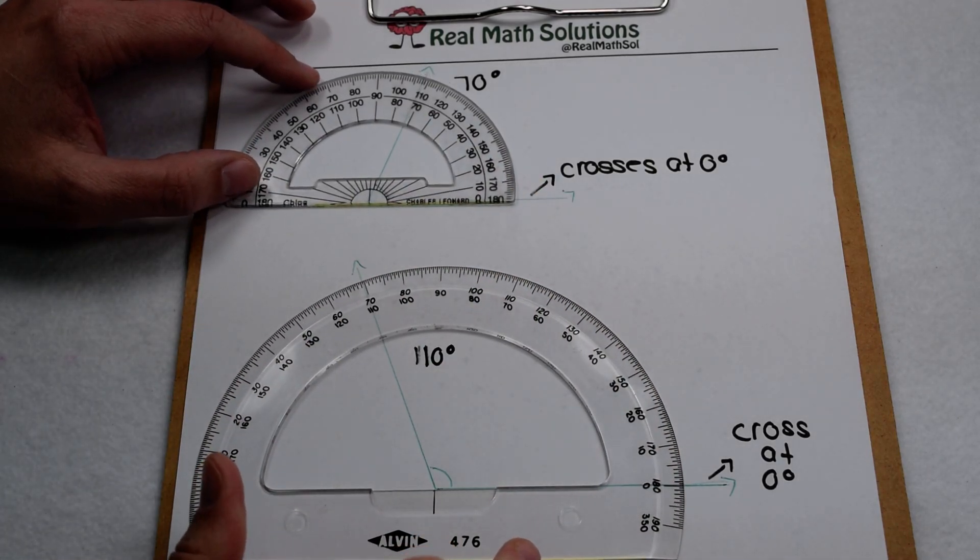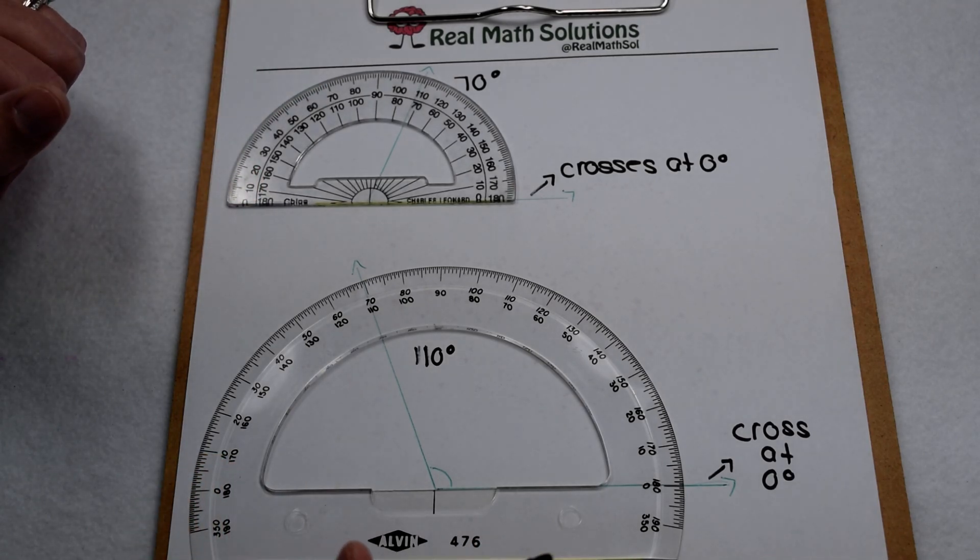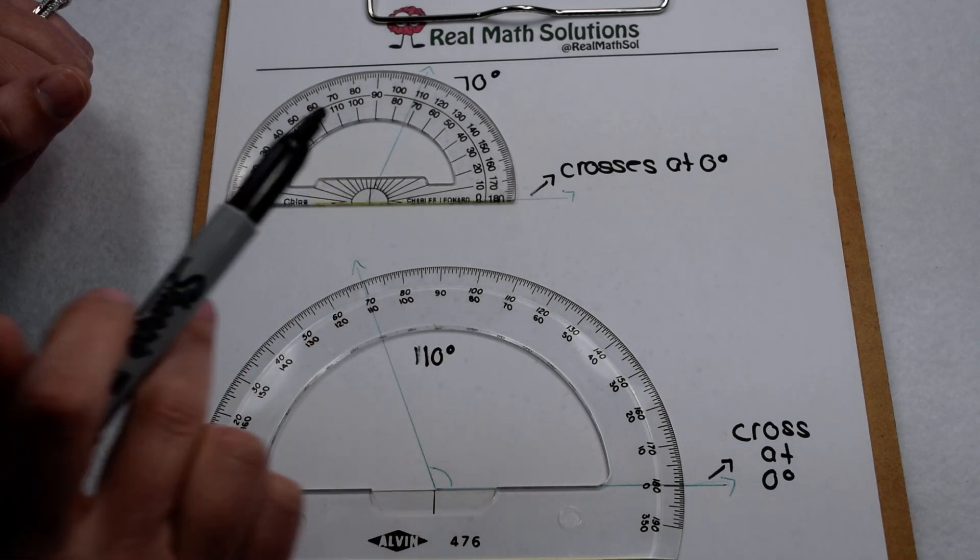So how you line up your protractor really depends on which protractor you're using. The key is to start by lining up your bottom ray so that it crosses at zero degrees.